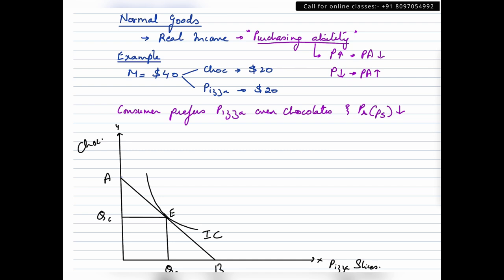Let us move on to the main example for this particular segment which is normal goods. Money income is equal to 40 dollars and consumer is spending it equally, 20 dollars each. Now this is an assumption that we've made that consumer prefers pizza over chocolate. He's completely disregarding healthy choices. Anyways chocolate is also not a very healthy choice but pizza definitely isn't. And the price of pizza slices has just gone down.